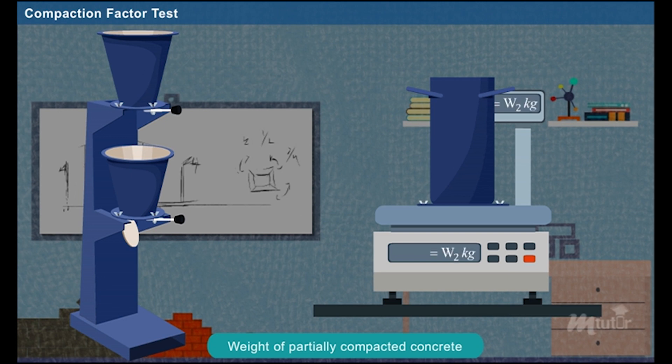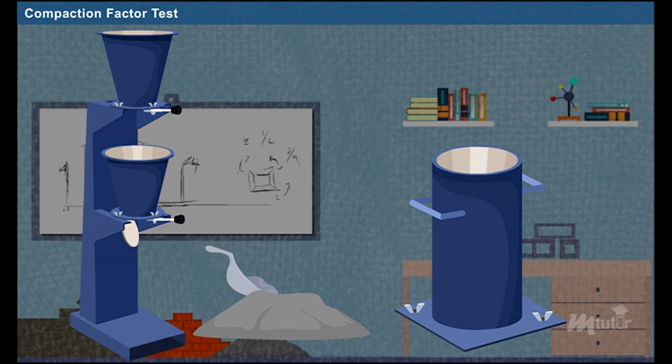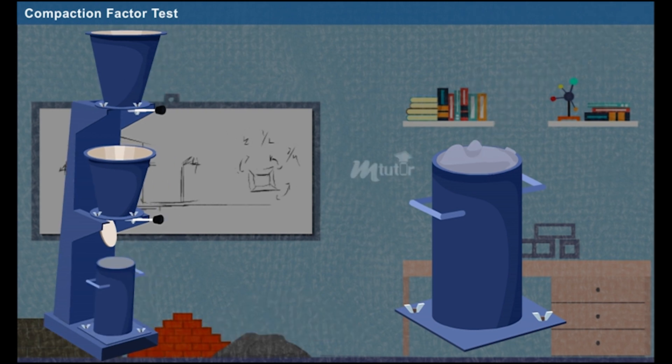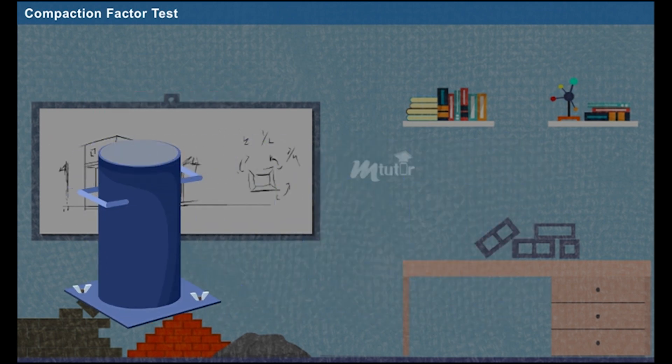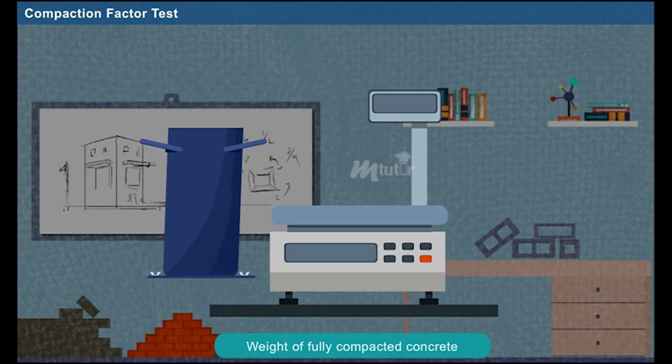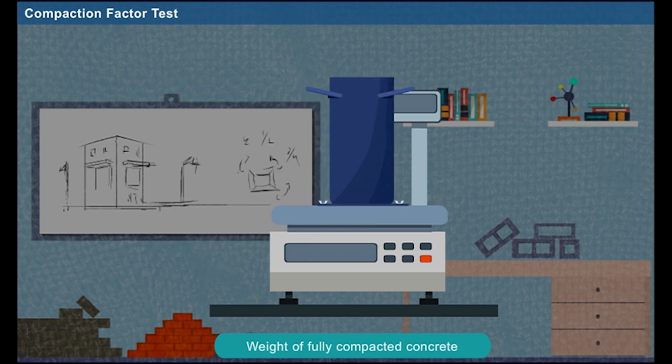Then, the cylinder is emptied and the concrete sample is filled again by filling it in three layers. Each layer is compacted by giving 25 blows using the tamping rod. Now, the concrete inside the cylinder is fully compacted. The weight of the cylinder with fully compacted concrete is taken as W3 kilograms.